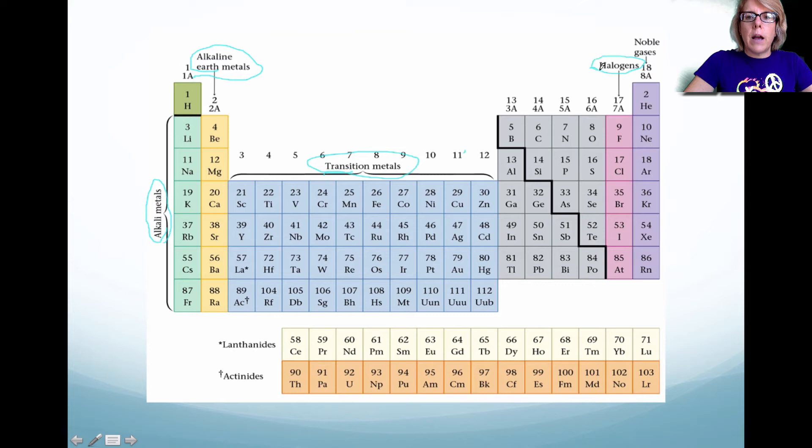However, right next to the gray columns are halogens. I do expect you to know that this pink group is called the halogens.